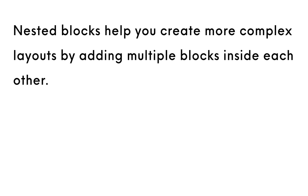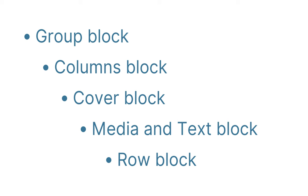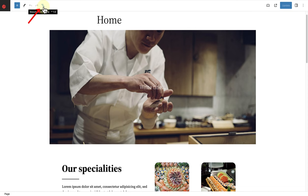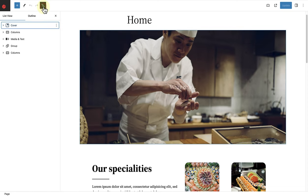Nested blocks help you create more complex layouts by adding multiple blocks inside each other. We typically use container blocks such as the group block, columns block, cover block, the media and text block, or row block to group content together. As a reminder, when you open up the list view, you can navigate between layers of content and nested blocks.